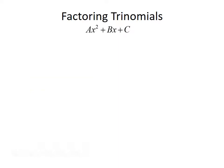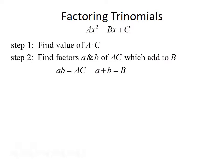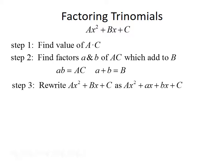The last topic is factoring trinomials of the form ax squared plus bx plus c. The first step is to multiply the first and last coefficients together to find the value of a times c. The second step is to find factors — little a and little b — of ac which add up to give the middle term b. Third, rewrite the trinomial as ax squared plus little-a times x plus little-b times x plus c. Then finish by factoring by grouping.